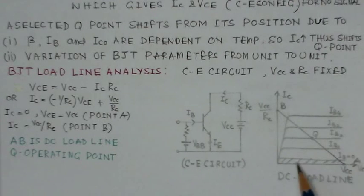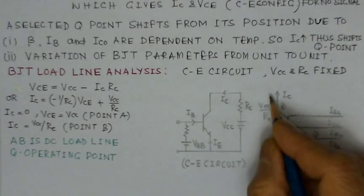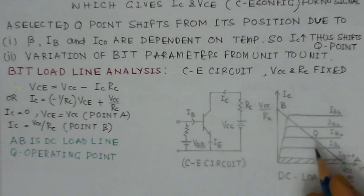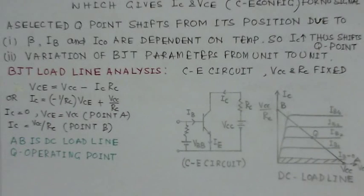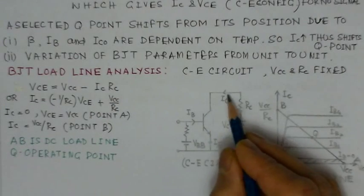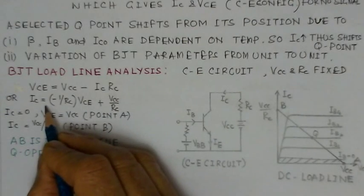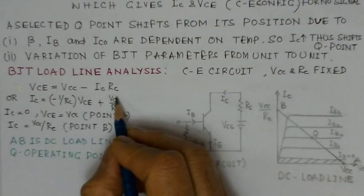The output characteristics show curves for IB equal to 0, IB1, IB2, IB3, and IB4. The x-axis is VCE and the y-axis is IC, the collector current. The equation for VCE is: VCE = VCC minus IC times RC, which is rewritten as IC = (−1/RC) × VCE + VCC/RC.